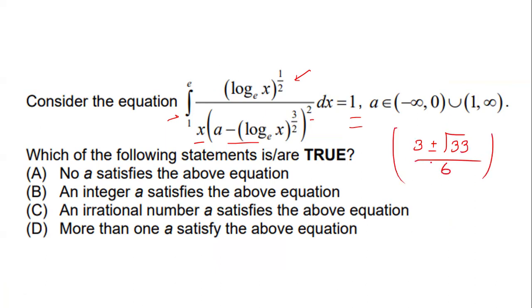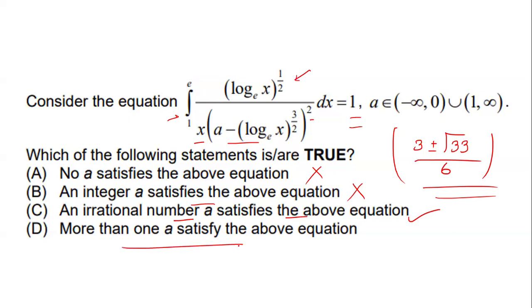The two values of a are (minus 3 plus or minus root 33) divided by 6. Now checking the options: 'No a satisfies the equation' is wrong since there are two values. 'An integer satisfies the equation' is wrong since these are irrational numbers. 'An irrational number satisfies the equation' — yes, correct. 'More than one a satisfies the equation' — yes, also correct. So options C and D are the final answers.